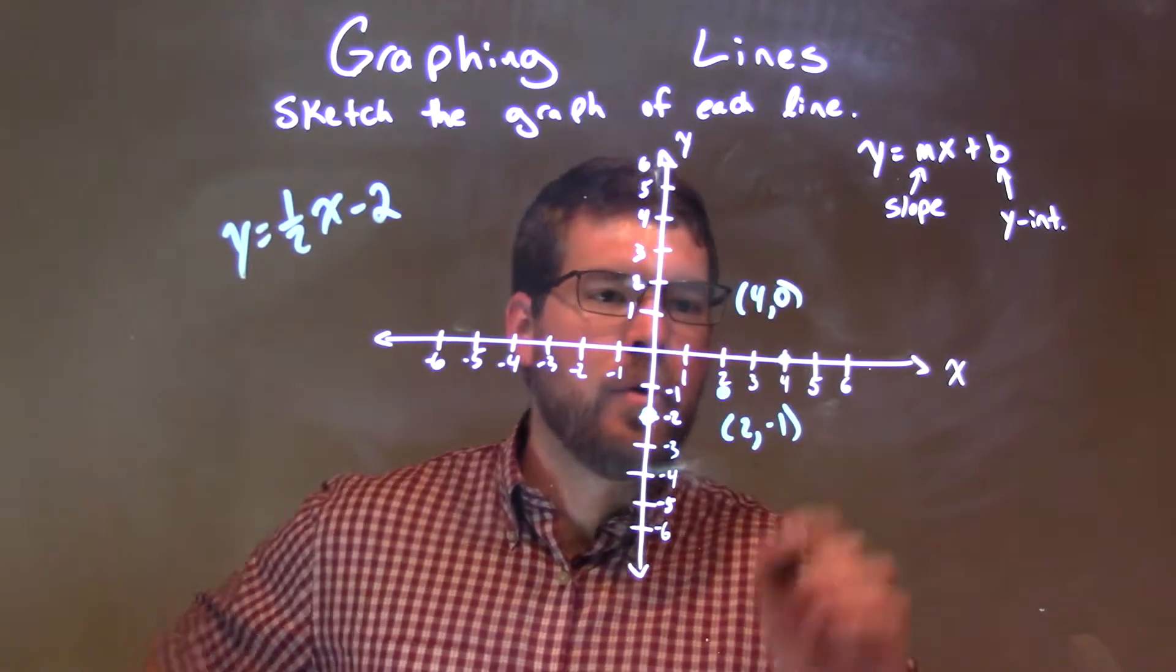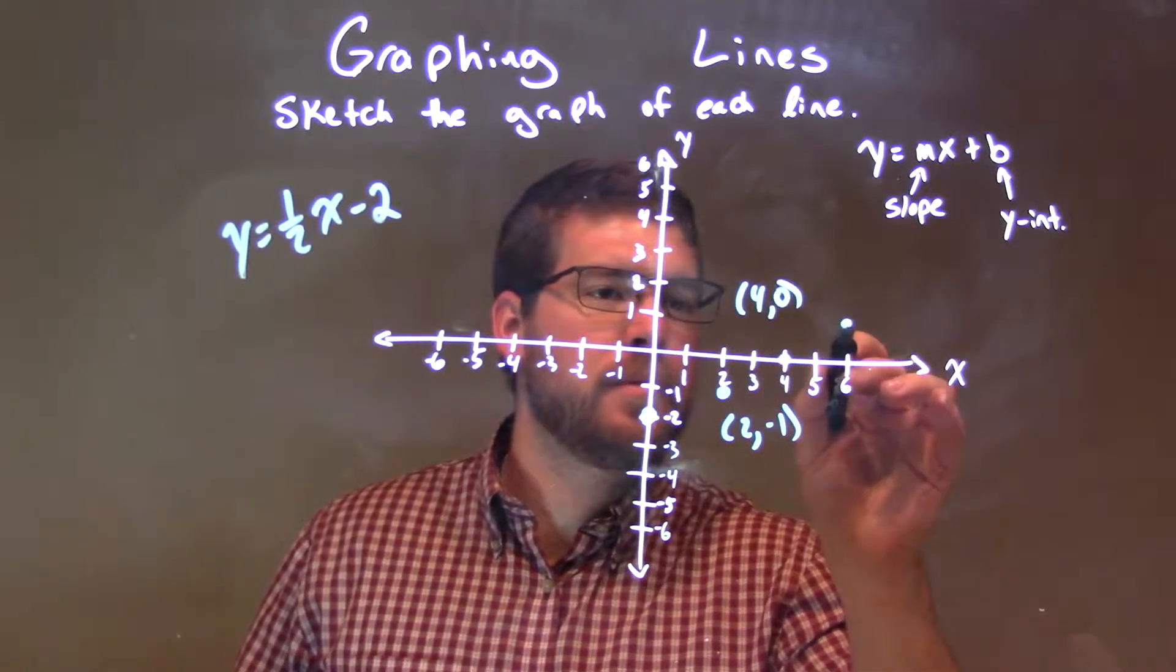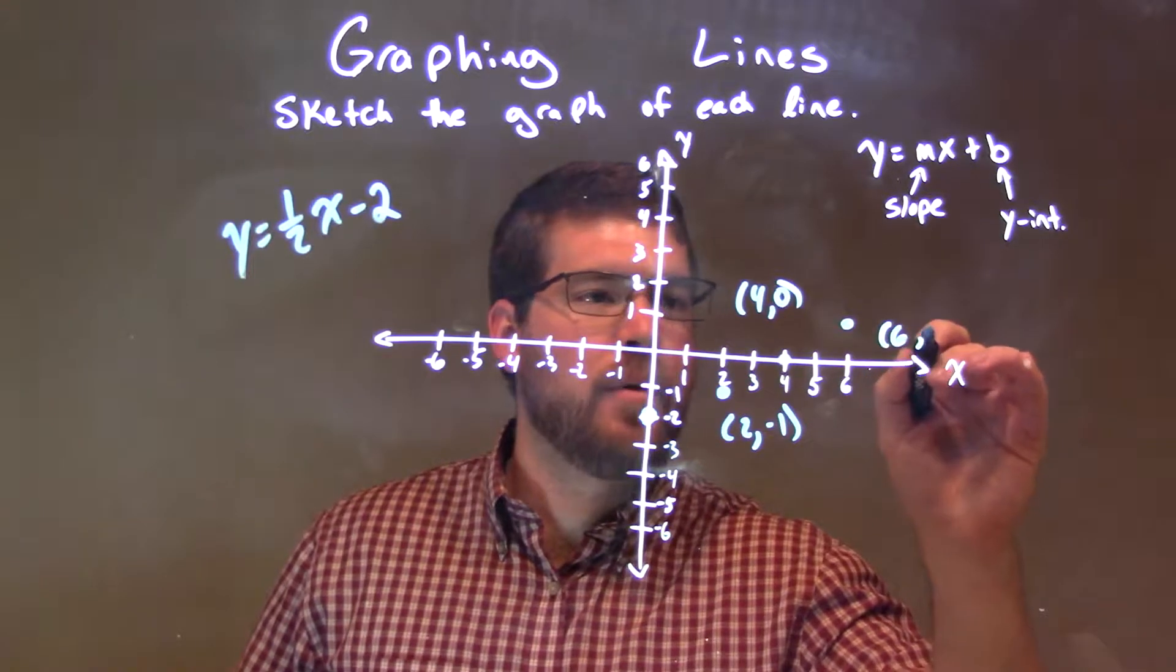And shoot, let's go one more. We go up one more unit over two, got a point right there, and that is six comma one.